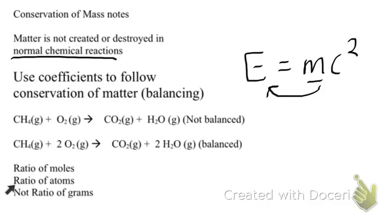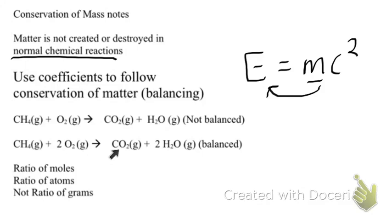It is not, however, a ratio of grams. So if you conduct this reaction with one gram of methane and two grams of oxygen, you will not produce one gram of CO2 or one gram of water. It does not work for grams — it is only a ratio for moles and atoms.